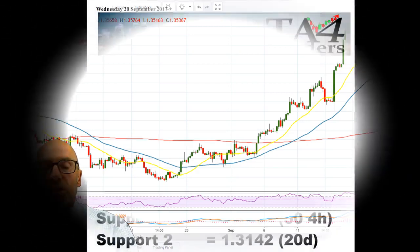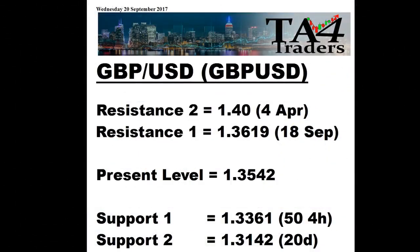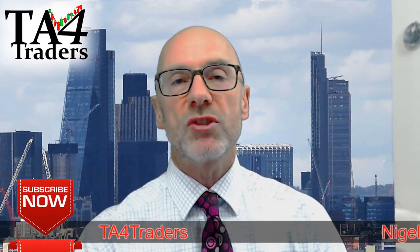Looking at the support and resistance points: we've got resistance at 136.19 from the 18th of September, then at 140 from April. Support is at 133.61, which is the 50 from the four hour, and support at 131.42, which is the 20-day moving average. Thank you for watching TA for Traders — please do remember these videos are for information only and not an investment recommendation.